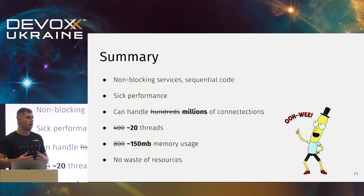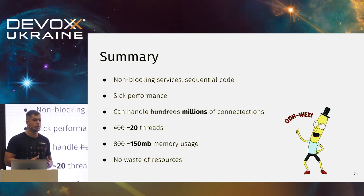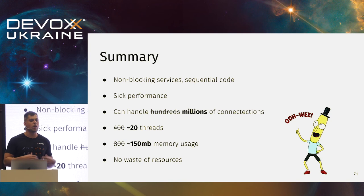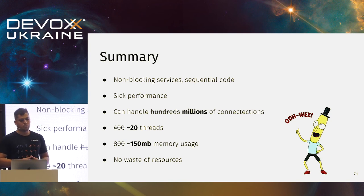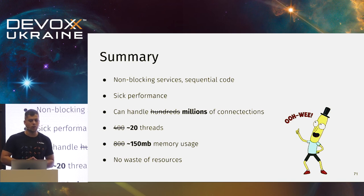In the end, now we're using non-blocking services but we still have our sanity writing sequential code with try-catch expressions and for loops — no new paradigm to learn. We got better performance because of the non-blocking approach, Netty, and Ktor. We can now handle millions of connections because we're not bound to thread pool size anymore — for each connection we create a new coroutine. We reduced thread usage from hundreds to just a dozen threads. We also reduced memory usage by four to five times by dropping Spring and reducing thread usage. This means we can place more services on one physical machine, reducing the cost of running services in production.